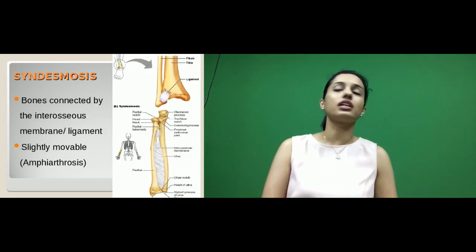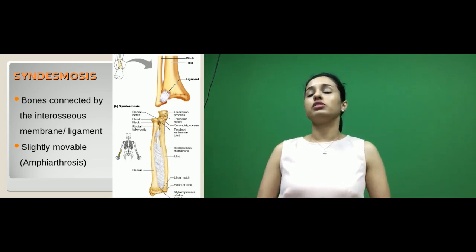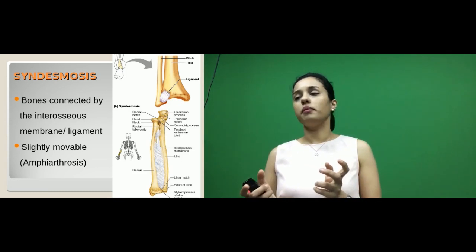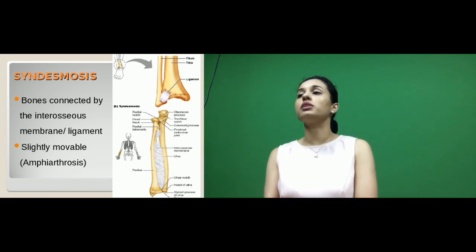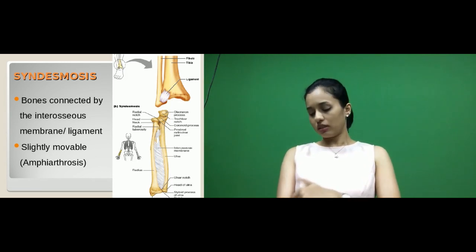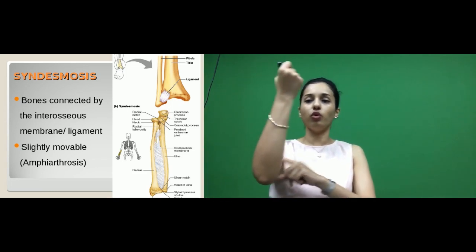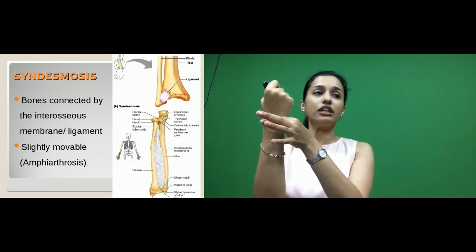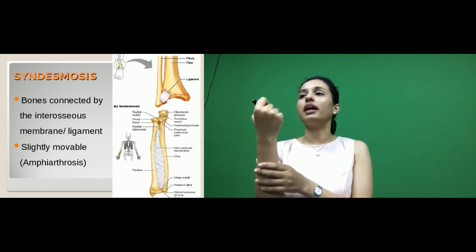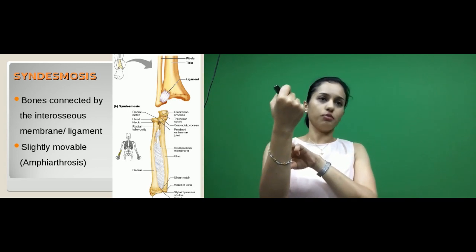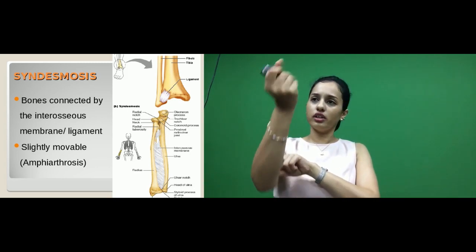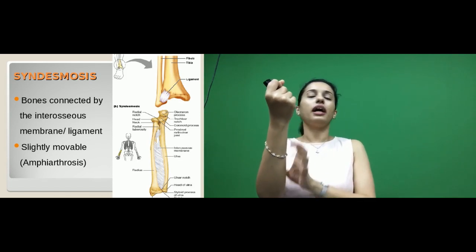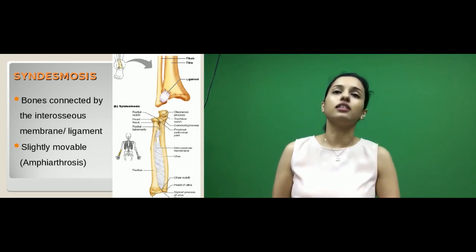The next is syndesmosis, where the bones are connected by a membrane or sheet called an interosseous membrane, or sometimes a ligament. These joints are slightly movable. A very good example is the interosseous membrane between the radius and ulna, which assists the superior radioulnar joint in supination and pronation. The movement is mainly held by the superior radioulnar joint but assisted by the syndesmosis connecting the radius and ulna.